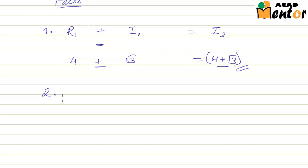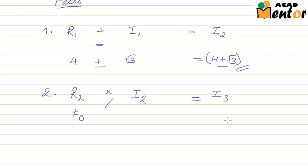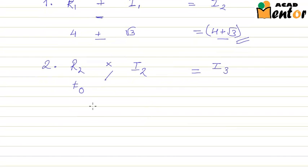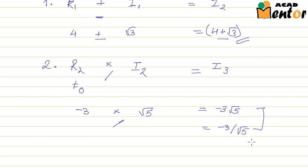The second fact: the product or quotient of a non-zero rational number and an irrational number is always an irrational number. That means if I have a rational number r2 and I multiply or divide it by any irrational number i2, provided r2 is not equal to 0, I will always get an irrational number. For example, negative 3 multiplied by √5 gives −3√5, and negative 3 divided by √5 gives −3/√5. Both these numbers are irrational.